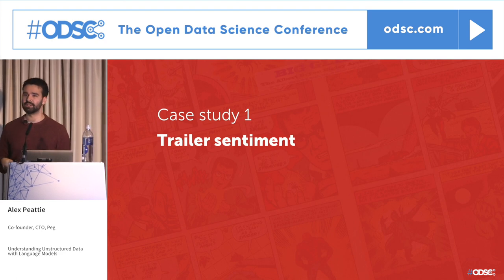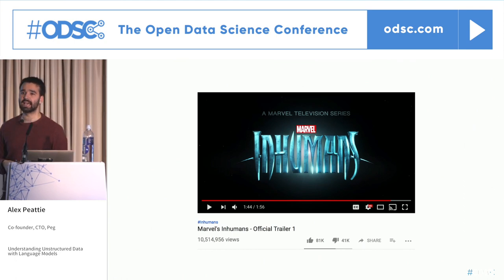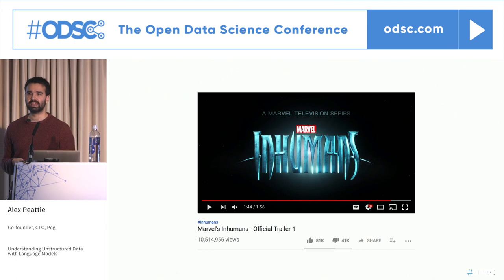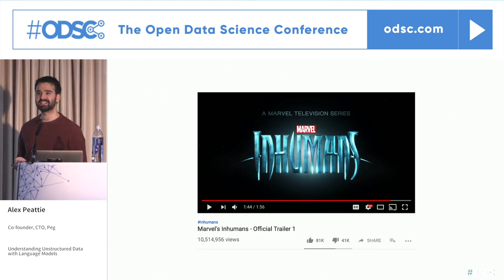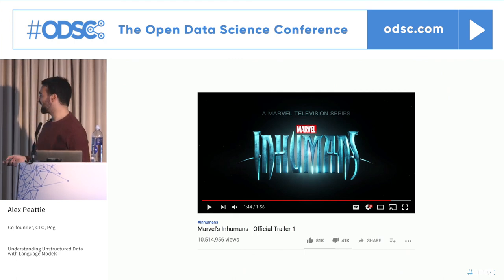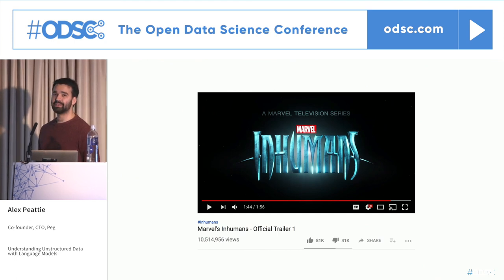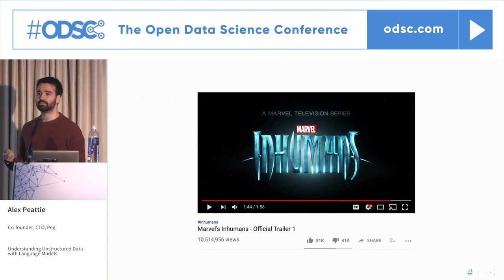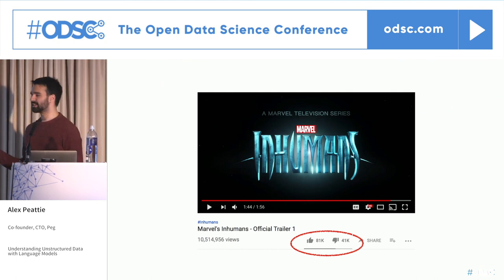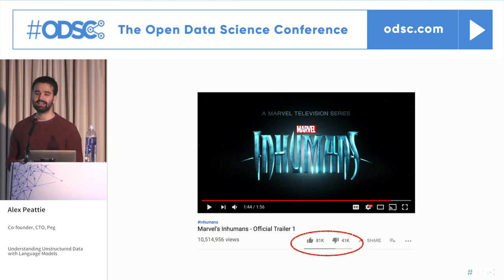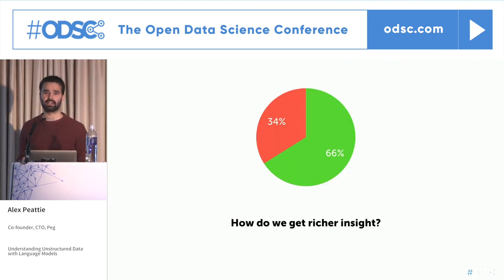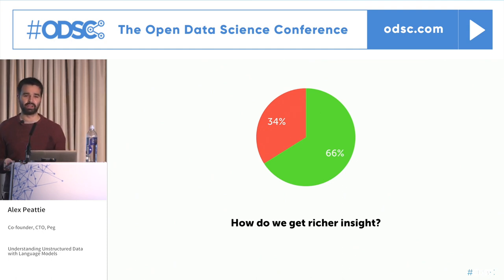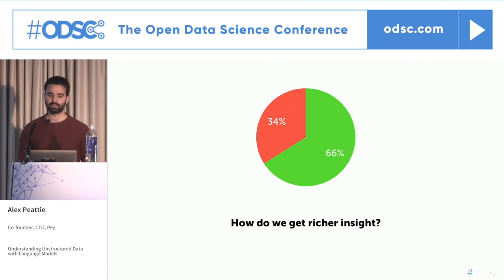To underscore this, let me walk through some case studies of where unstructured data and language models are used to generate novel insight. For our first case study, let's put ourselves in the shoes of a data scientist at Marvel, which is now part of Disney. Marvel has just released a trailer for Inhumans, a new TV show. This got a really negative reception — certainly for Marvel, which usually generates a lot of excitement. We're called in as Marvel's data scientists to understand this and suggest actionable next steps. There is some structured data — like count versus dislike count, number of views — but that doesn't give us much interesting or actionable insight. How can we get some richer insight?